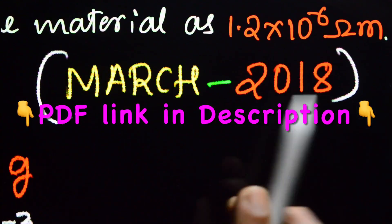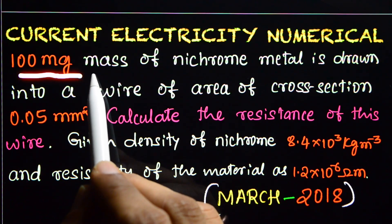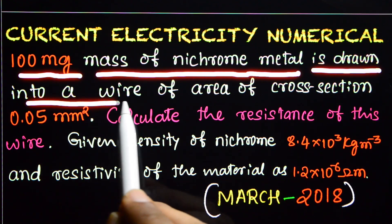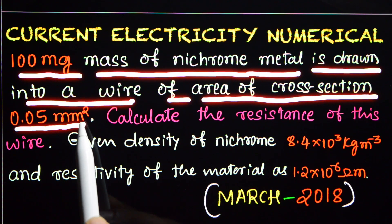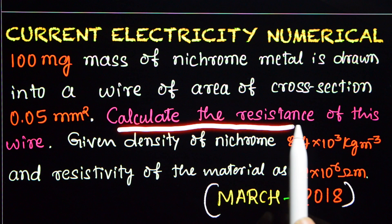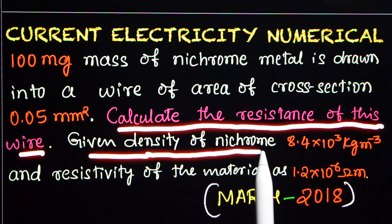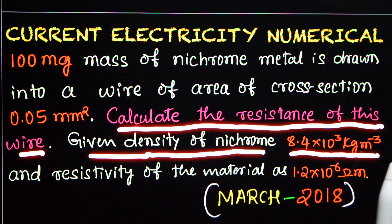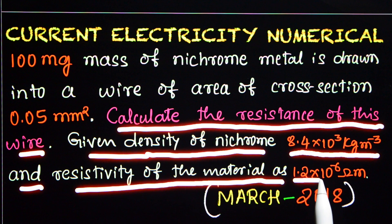Current Electricity Numerical, March 2018. A 100 mg mass of nichrome metal is drawn into a wire of area of cross section 0.05 mm². Calculate the resistance of this wire. Given: density of nichrome is 8.4 × 10³ kg per meter cube, and resistivity of the material is 1.2 × 10⁻⁶ ohm meter.